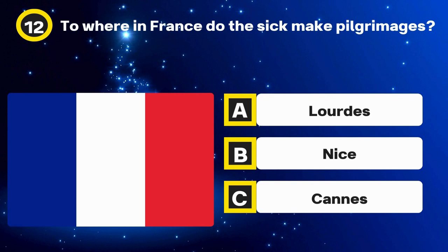Question 16. Sabotage is French — what did the saboteurs use? Options: Clogs, Broken glass, Wooden shoes. The answer: Wooden shoes.